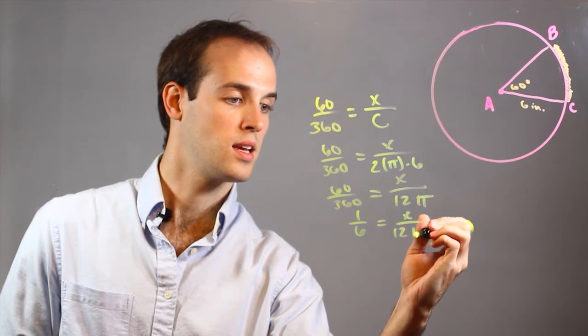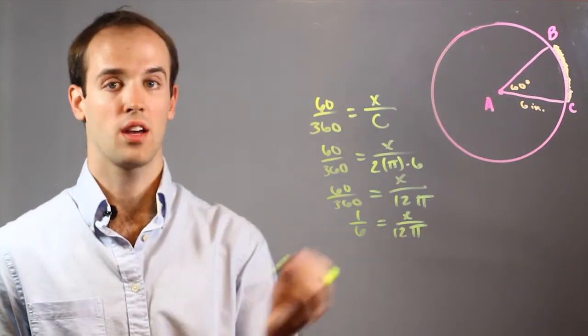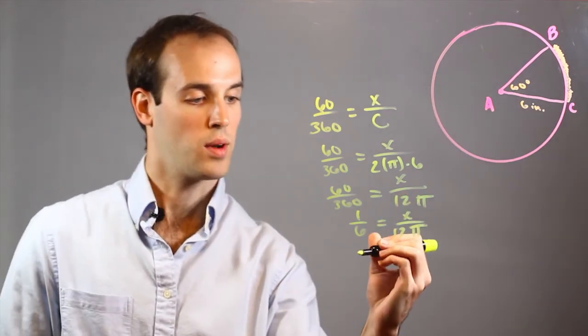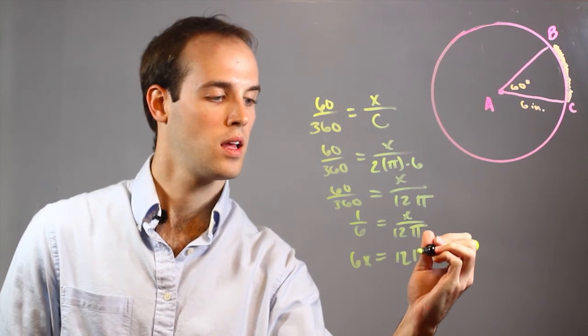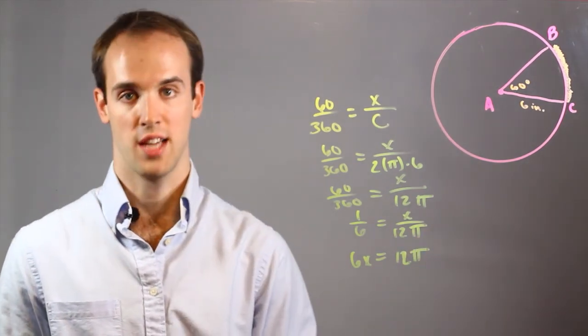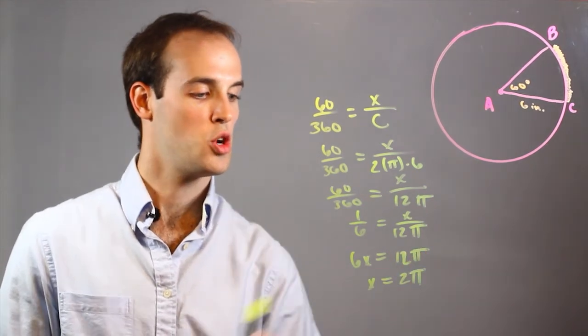So, 1 over 6 equals x over 12 pi. And then I would just cross multiply, and I would get 6x equals 12 pi. Divide both sides by 6. x equals 2 pi.